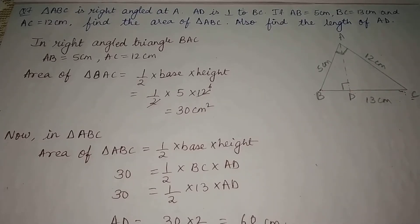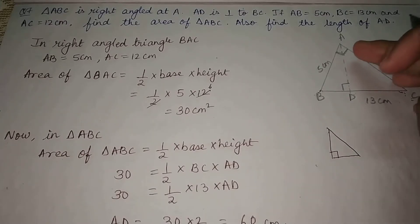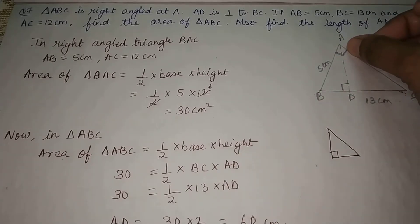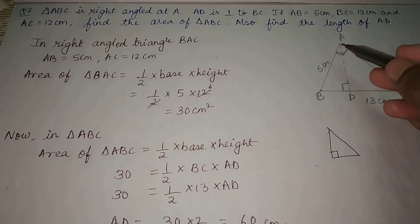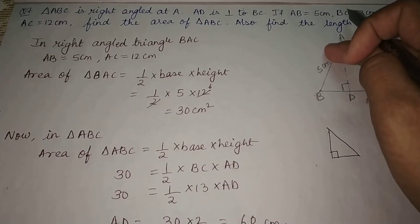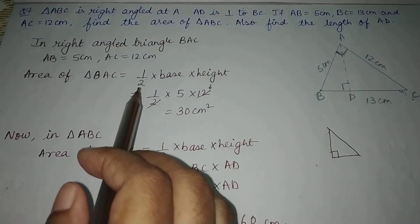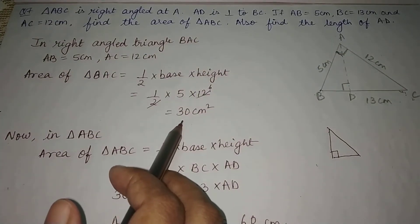Since the height AD is not given, we cannot use AD and BC directly. However, as the triangle is right-angled at A, we take AB as the height and AC as the base — or vice versa. AB is 5 cm and AC is 12 cm. Area of triangle equals half times base times height, that is half times 5 times 12, giving 30 cm².